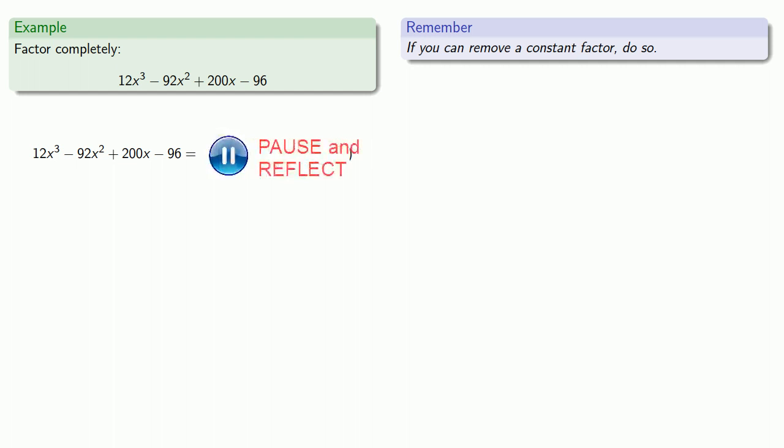So let's try and factor this mess. The first thing to remember is that if you can remove a constant factor, do so. It'll make your life much easier. So here we see that every term has a factor of 4, so we can remove a factor of 4.